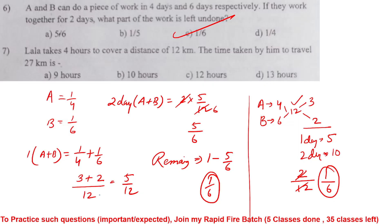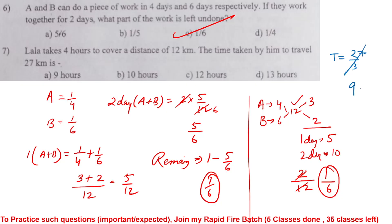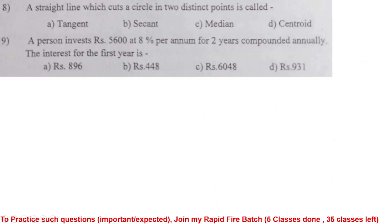Lala takes 4 hours to complete a distance of 12 kilometers. Time formula: time = distance / speed. Speed = 12/4 = 3 km/h. For 27 kilometers: time = 27/3 = 9 hours. Option A is the correct answer.